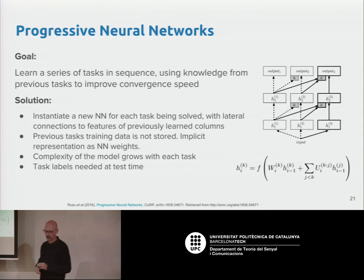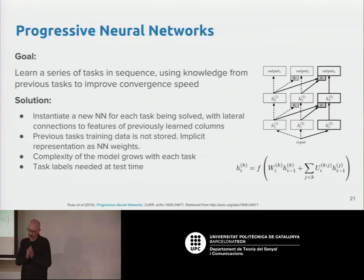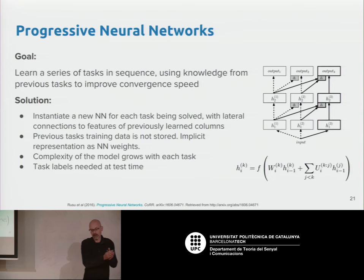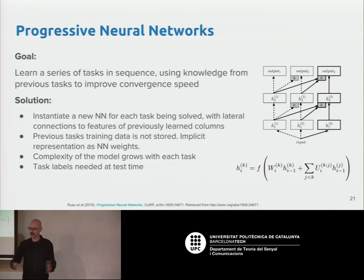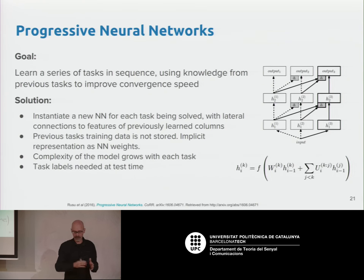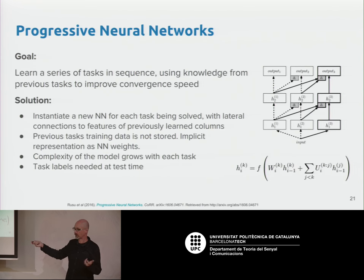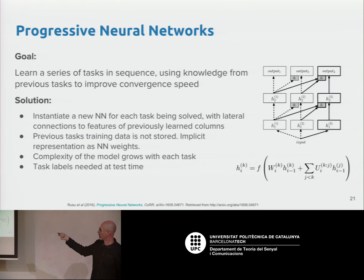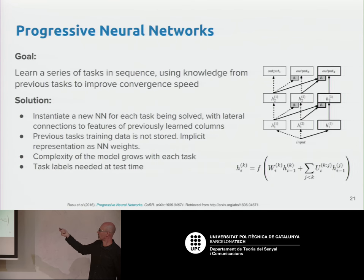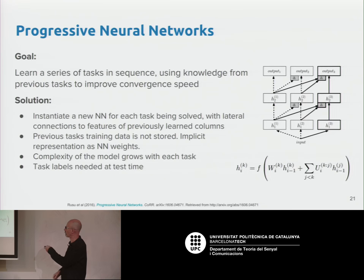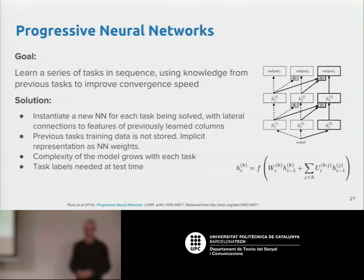The model keeps growing over time, so if there are many tasks, the final model becomes very complex. Another problem is that you need task labels — you must know at inference time whether the input is for face recognition or face expression analysis, in order to route through the correct network.